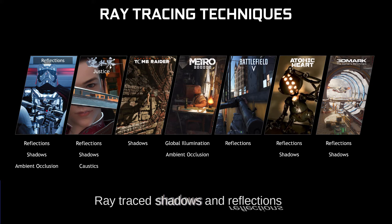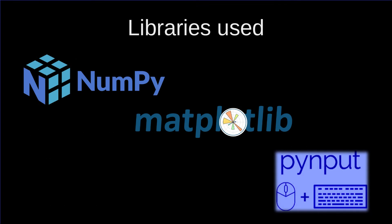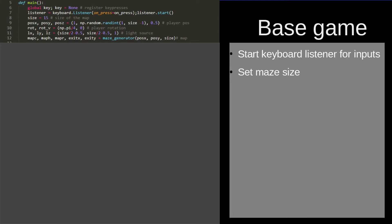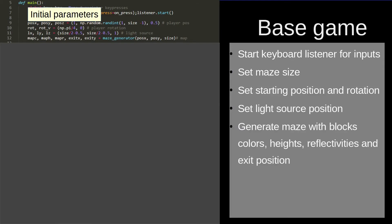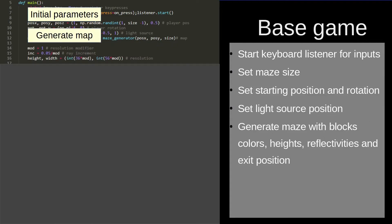Before we start launching rays, we will need a base game — a very simple 3D maze with similar code to what I showed in previous videos. I will pass very quickly through all the main components, but you can also skip straight to the ray tracing part. The main libraries we will use are NumPy, Matplotlib and pynput. We start by defining some parameters and initializing the keyboard listener for movement. After that we generate a random map based on those parameters — created by a random walker — which returns the heights, colors and reflectivity of the blocks, in addition to the exit of the maze. We also define the resolution using a modifier so that dependent values are changed automatically.